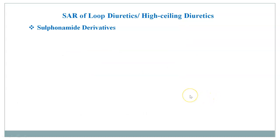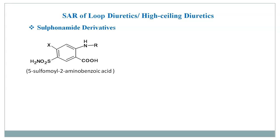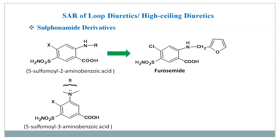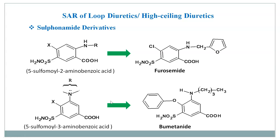The first representative compound from the 5-sulphonamide 2-amino benzoic acid series is furosemide. In its structure, the activating group X is chloride, and the 2-amino group is substituted with a furfuryl group. The representative example from the 5-sulphonamide 3-amino benzoic acid series is bumetanide, where the activating group is phenoxy and the amino group is present at the third position.